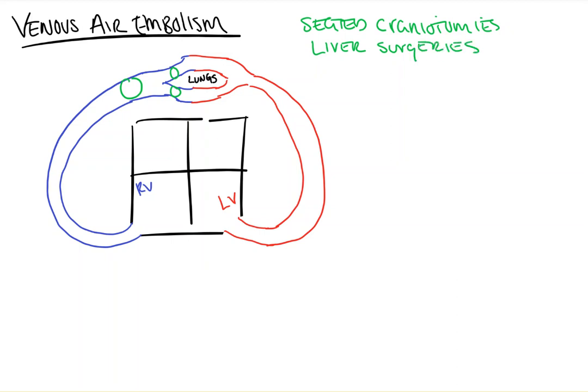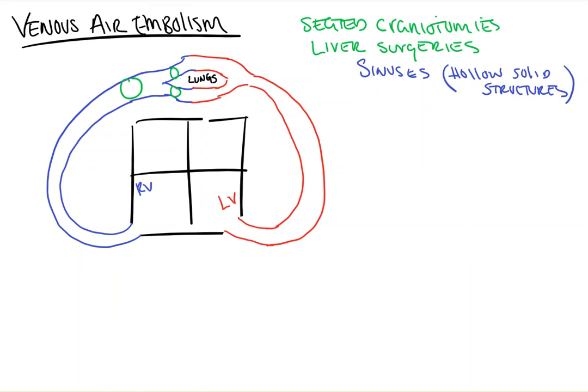Why does it happen specifically in these two types of cases? There's something very special about the venous system of the brain and the liver: they are made of sinuses as opposed to vessels. Structurally, the difference is that sinuses are hollow, solid structures as opposed to veins that are collapsible. If you cut your arm, the vein collapses — venous vessels collapse under the weight around them. But sinuses don't collapse, so air is able to get into them more easily.